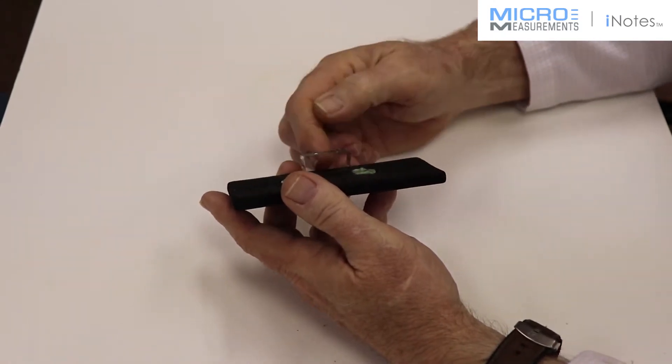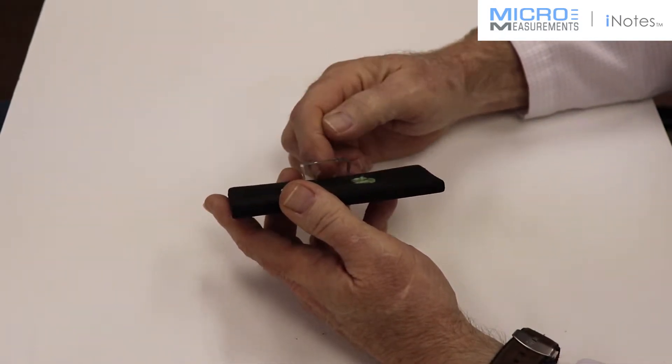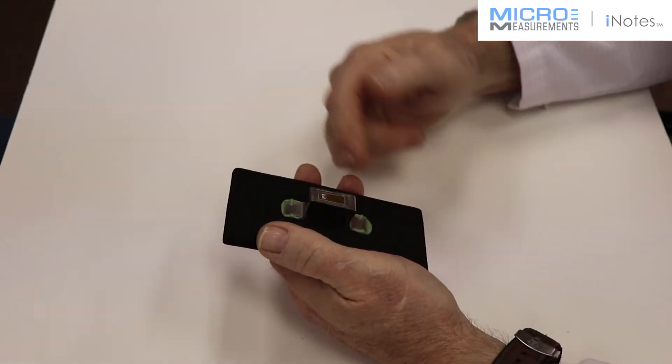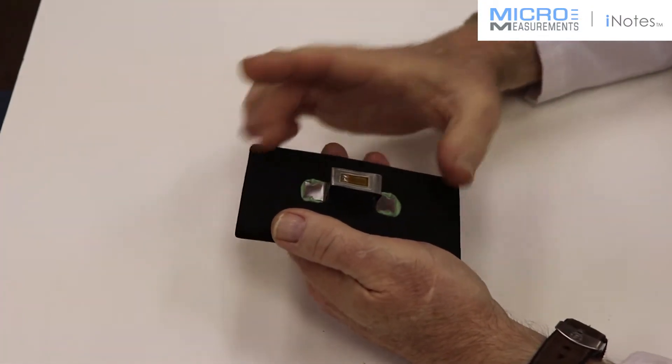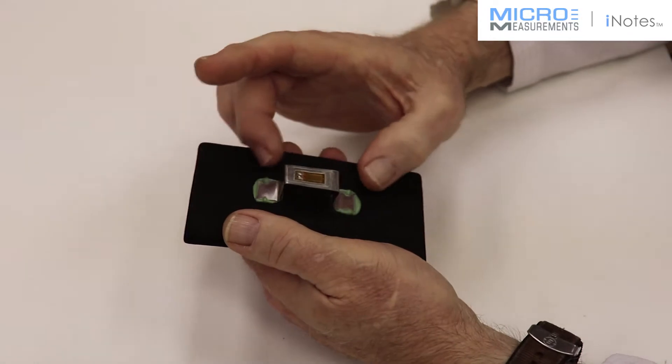the top will go into compression, the bottom will go into tension, and if you make it into a full bridge, you can calibrate it based on displacement or microstrain.